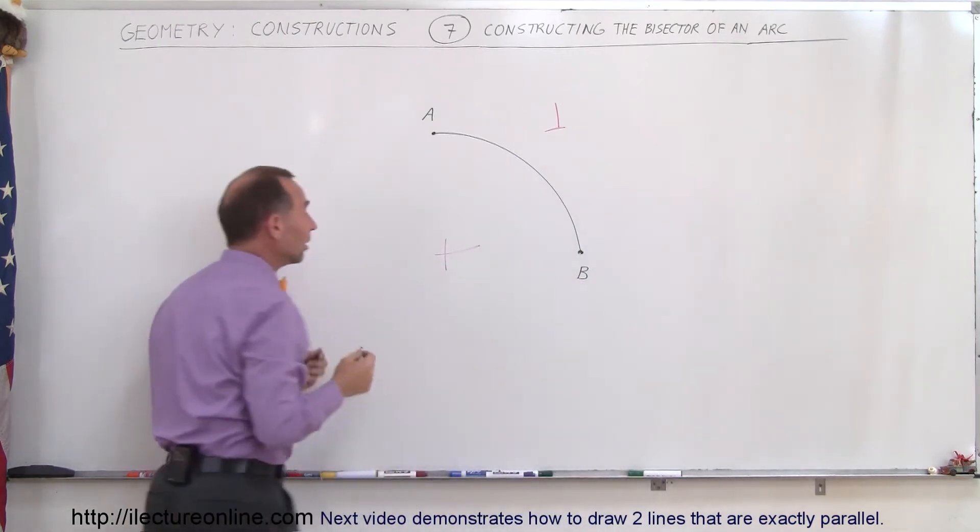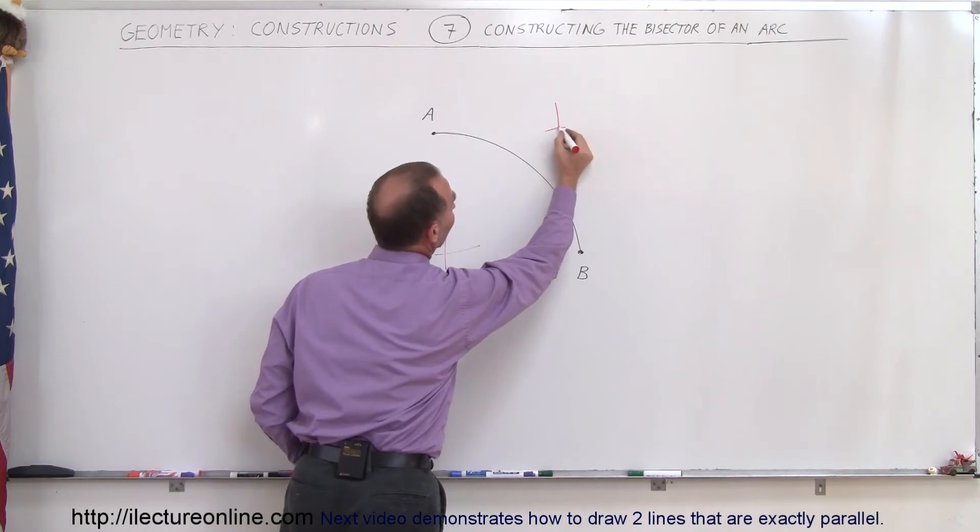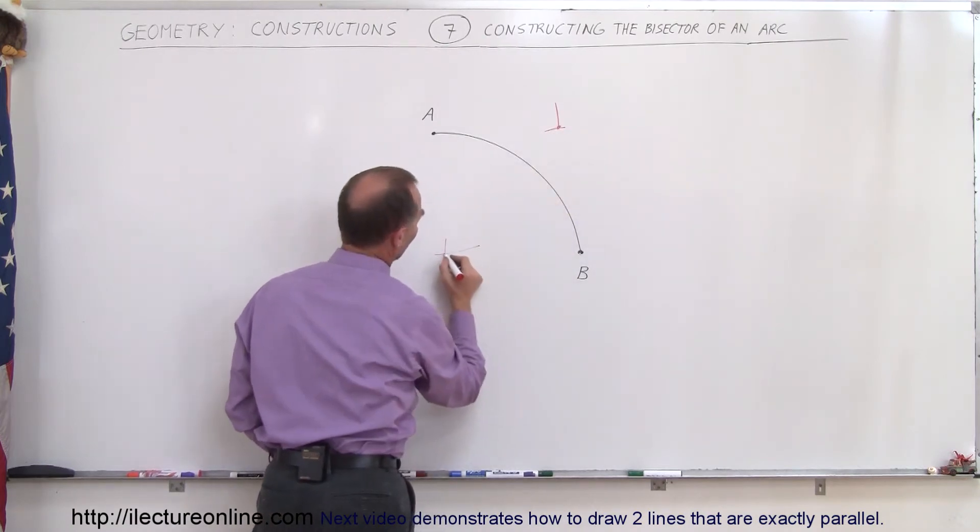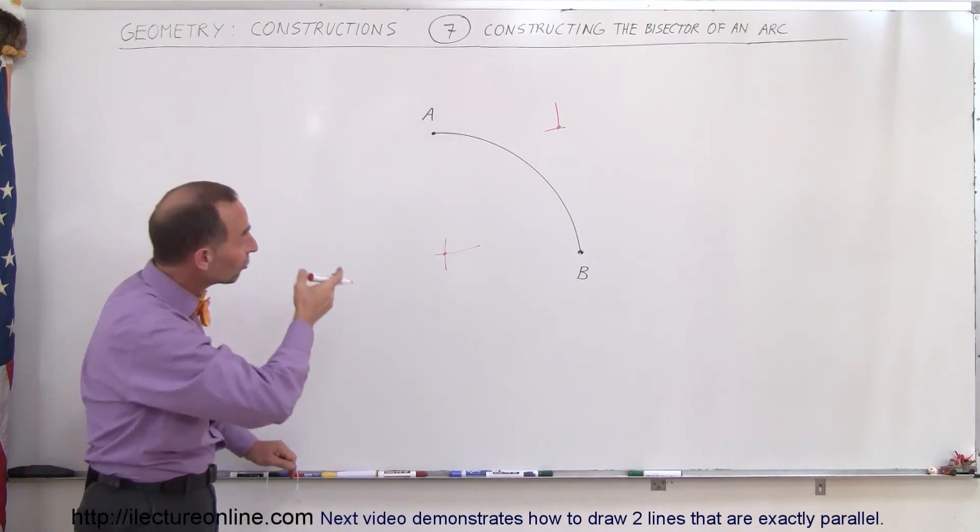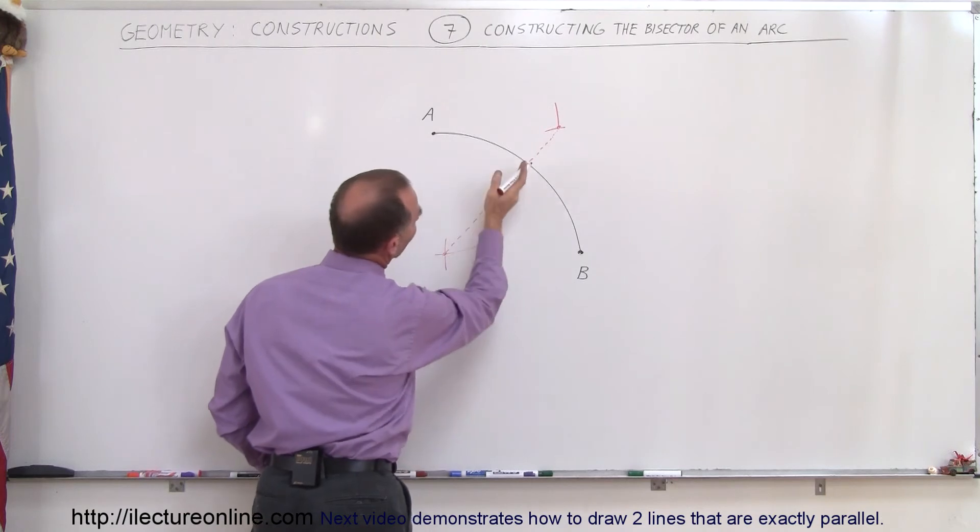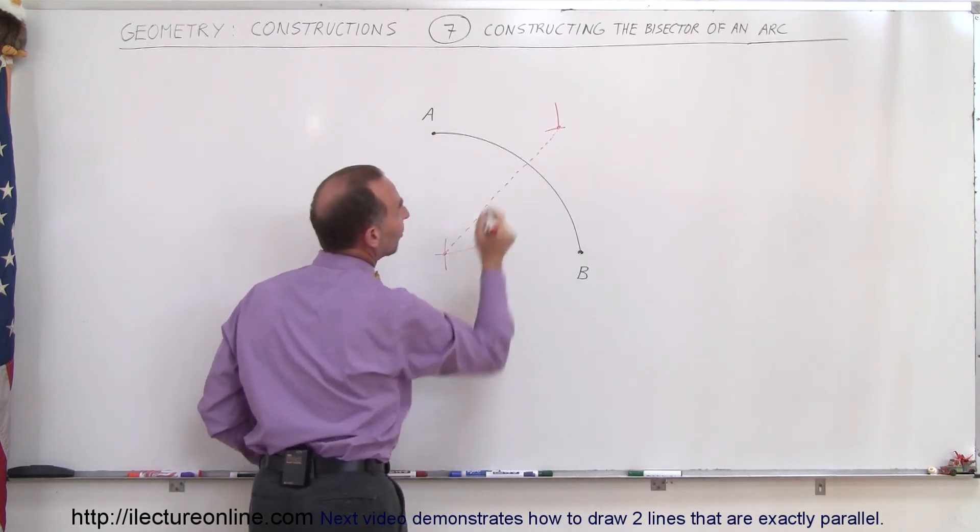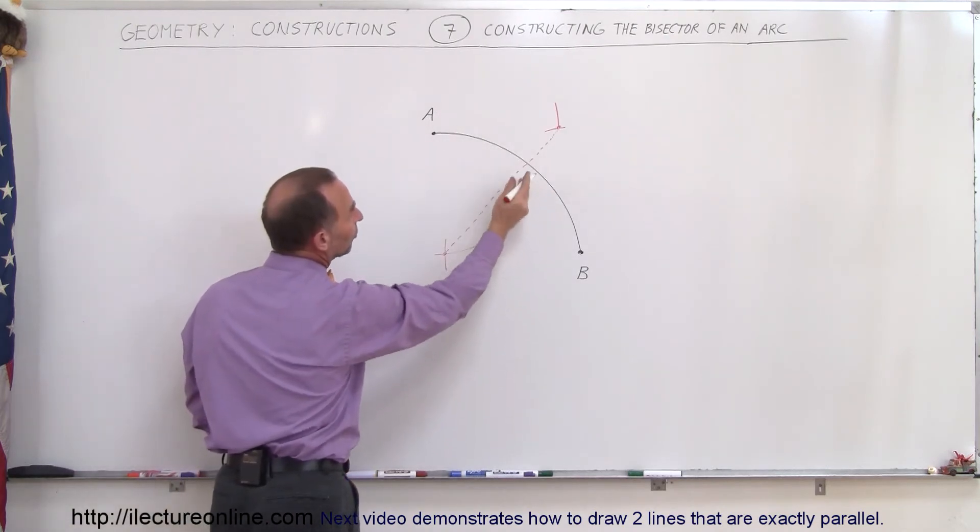So now you have two little arcs that cross one another. This one almost didn't cross, but you can still see it close enough. There's a point right there and there's a point right there. If we now draw a line that connects those two points, like so, where the line crosses the arc, that's the bisector of the arc.